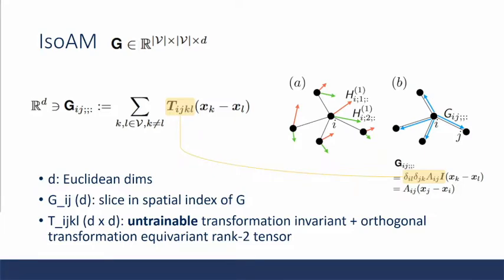So let's dive into iso-adjacency matrix, really the key concept that defines this whole method. Here we have iso-adjacency matrix G defined in the space of V number of vertices by V by d, which is the Euclidean dimension of the data. We're going to look at just G_ij, which is one slice of the matrix between vertex i and j. And G_ij is defined as the sum of k and l, which are a set of vertices, but k cannot equal l. So this is a key assumption that there are no self-loops. And this is the sum of an untrainable rank 2 tensor T, which is transformation invariant and orthogonally transformation equivariant, multiplied by the difference between the two data points.